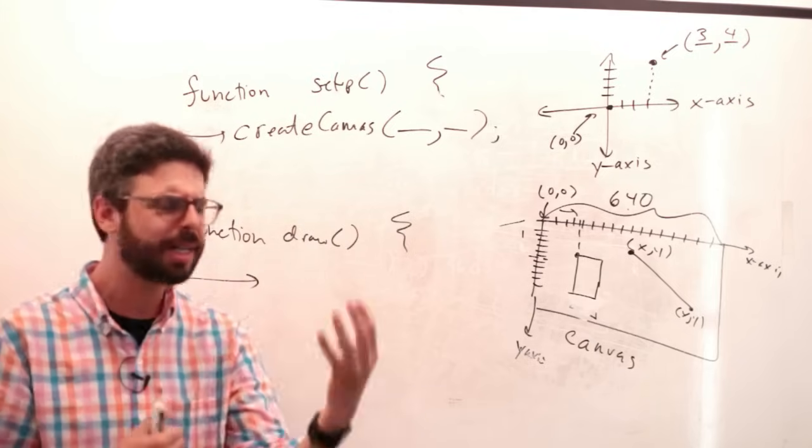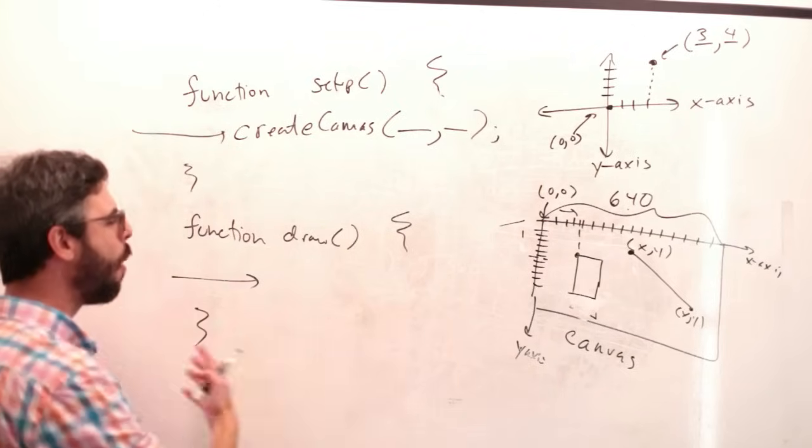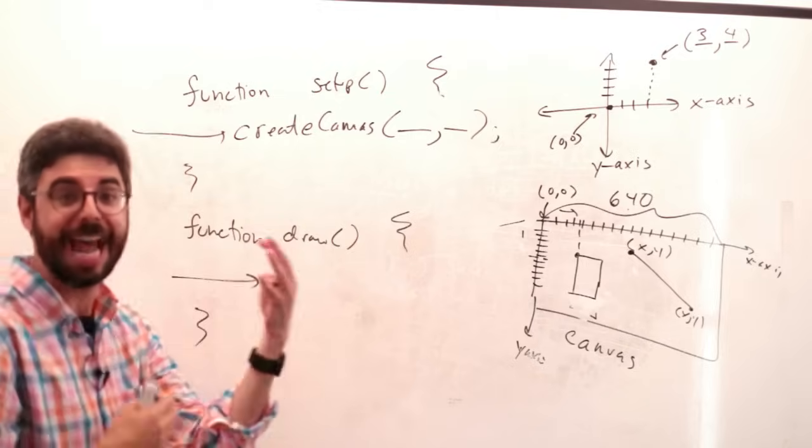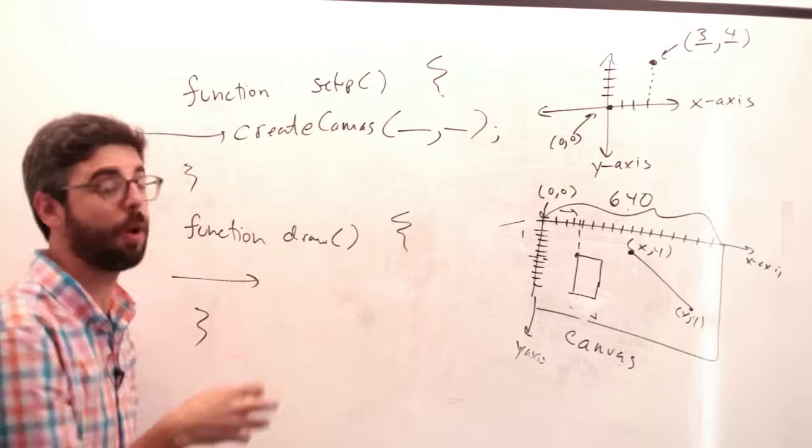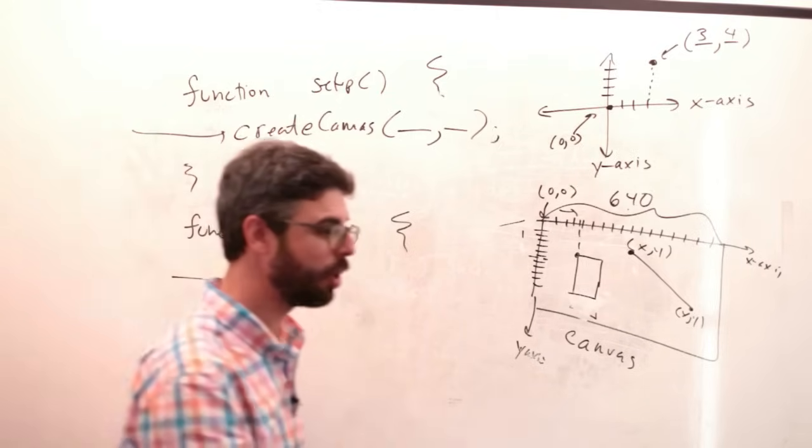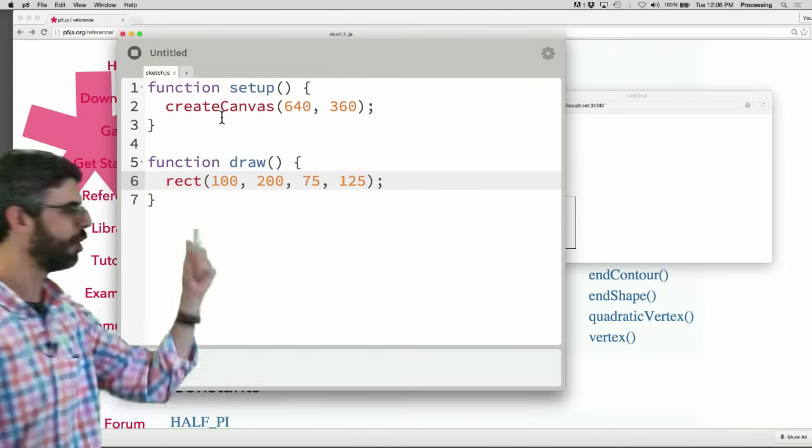So there's more to it because we're going to need to make things animate. We're going to need to do something when someone clicks the mouse. And how we handle different events and how the program flows over time, I will get into this more and more in a future video. And we can look back here and we can see there it is. Setup has create canvas, draw has rectangle.